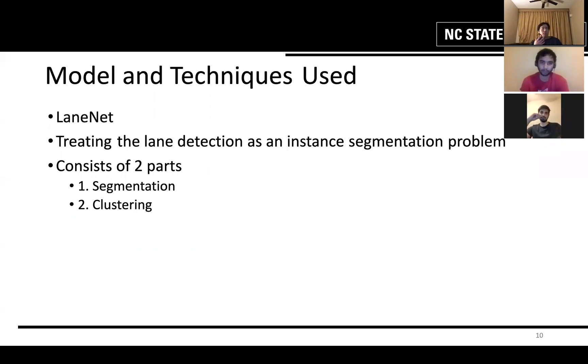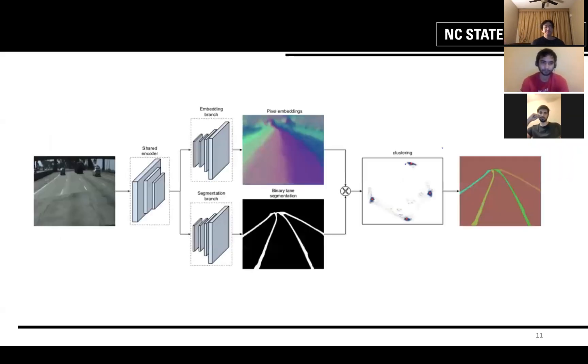Our model consists of two parts. The first one is segmentation and the second one is clustering. We have an input image and we have an encoder that divides into two branches. The first one is binary segmentation and the second one belongs to instance segmentation. Then we form a pixel embedding from both of these branches. We do a clustering of them and finally we create an output and you can see the mask output.